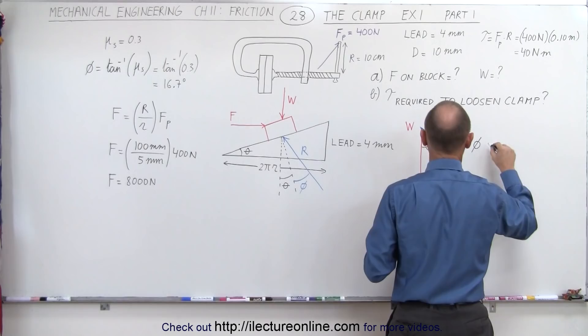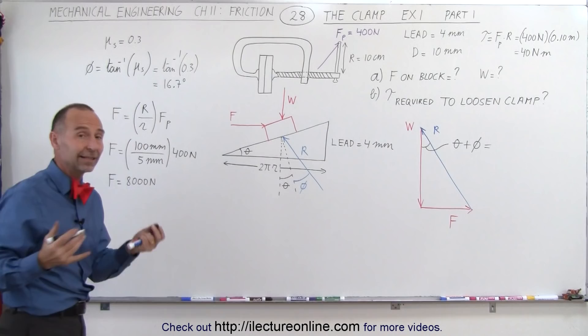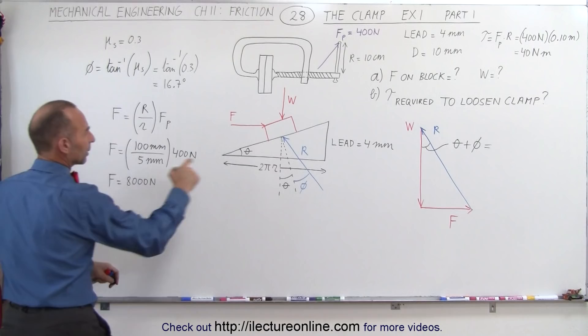And the lead angle, let's see, we don't have the lead angle yet. We need to calculate the lead angle. So let's go ahead and do that. How do we find theta? Well, theta can be found by the ratio of the lead to the circumference of the thread.